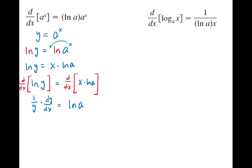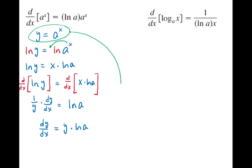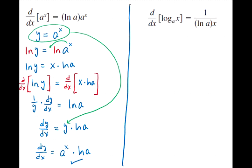Now we multiply both sides of the equation by y to isolate dy/dx. So dy/dx equals y times ln(a). Since y is a to the x, we substitute that in, giving us dy/dx equals a to the x times the natural log of a. That is the derivative formula we were trying to show.